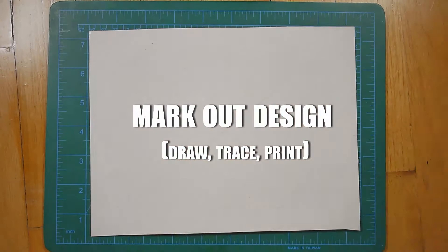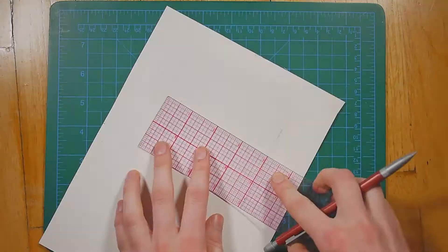First, you need to mark out your design, which you can do by drawing it out yourself or tracing from an existing pattern. Another option is to print it directly onto your stencil material.